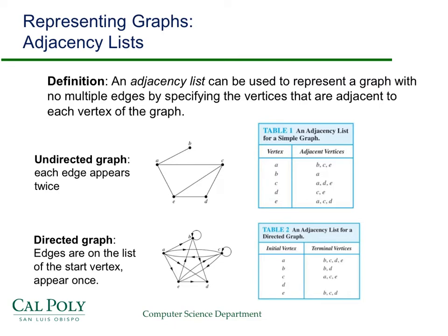In a directed graph, that's no longer true. Now, each edge is only going to be on the list of the start vertex, and they're going to appear only once. So here, there's an edge from A to B here, and that's only going to appear once.